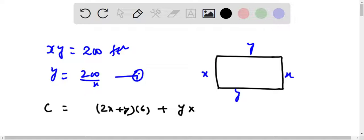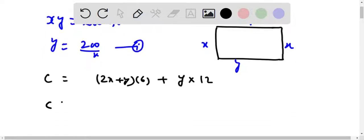So that means cost becomes 12X plus 6Y plus 12Y, which is 18Y. So cost as a function of single variable X from here will be 12X plus 18 into 200 by X.